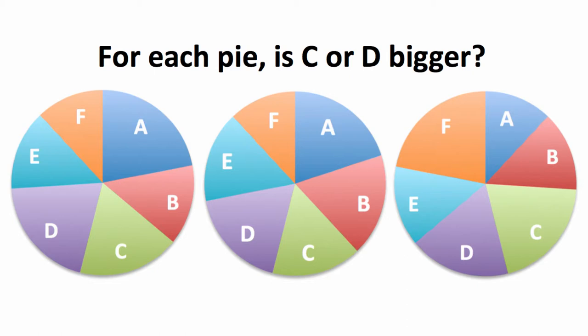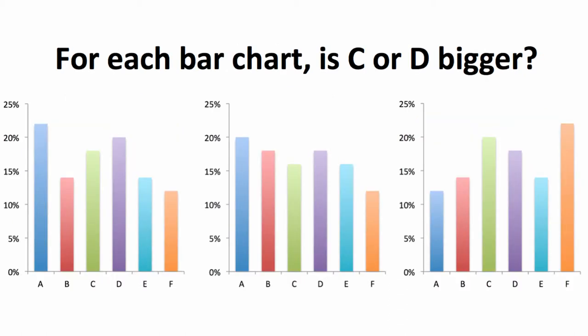On the other hand, if we put the same data into bar charts, and I'll even use the same colors, then the job is much easier. Your job is to look at the charts and determine whether there are more people in bar C, which is green, or bar D, which is purple, in each chart. In this case, it's so easy as to be trivial. D is longer on the left chart as well as in the middle chart, but C is longer on the right chart.